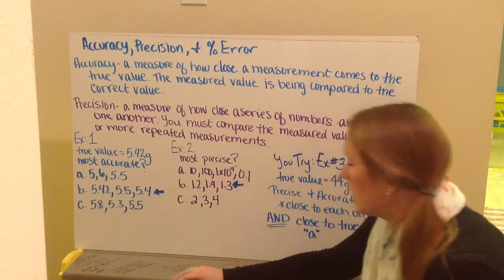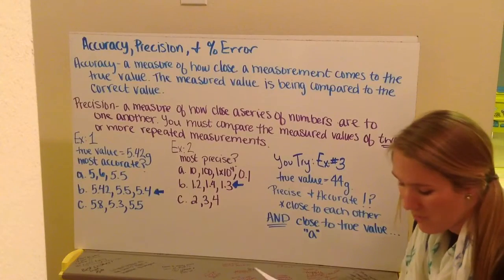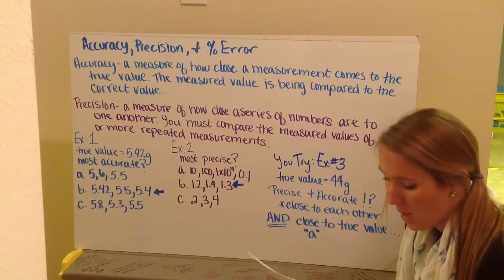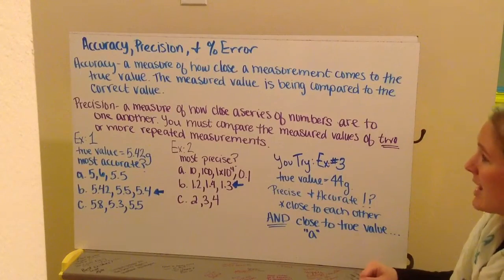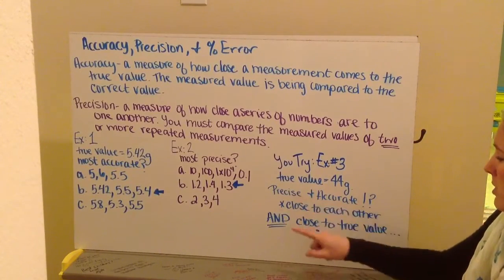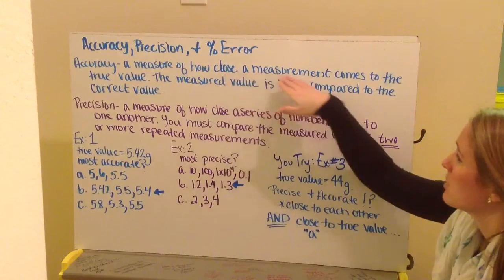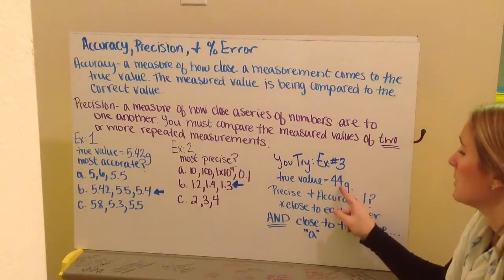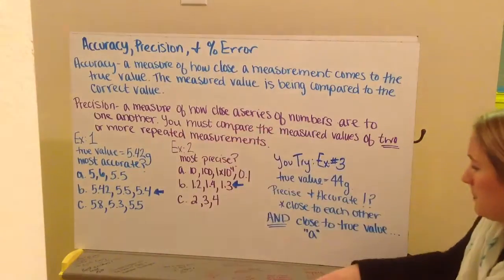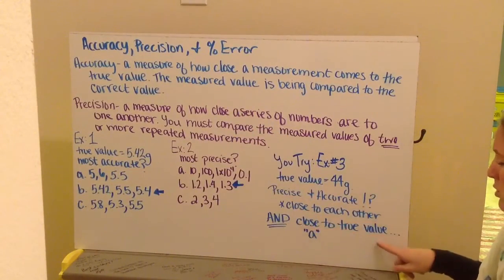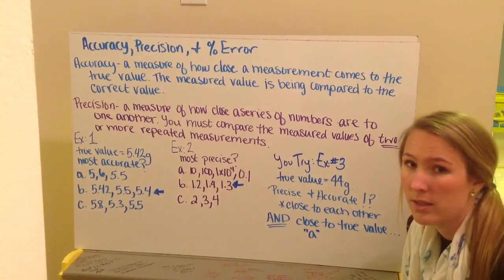Go ahead and try number 3. Number 3 says that the true mass of a partially filled bottle of water is 44 grams. Which set of measurements is the most precise and accurate? So we want precision and accuracy. We're told that our true value is 44 grams. So we want the choices that have the closest measurement to my 44 grams. And to be precise, they need to be close to one another. So close to each other and close to the true value. When you look at your choices, you should see the answer of A.